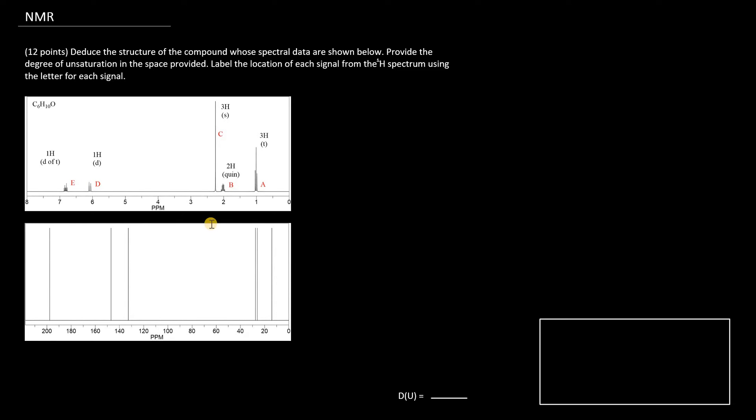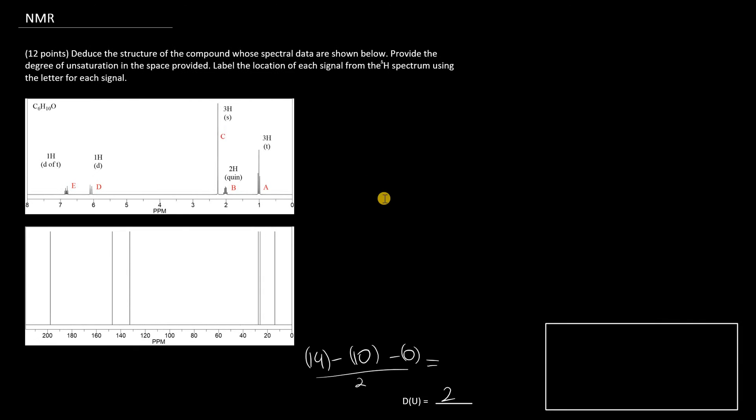So now we should calculate DU and C, our functional groups, right after. Like in part one, because we're only dealing with carbons, hydrogens, and most importantly, oxygen, oxygen isn't accounted for in DU.